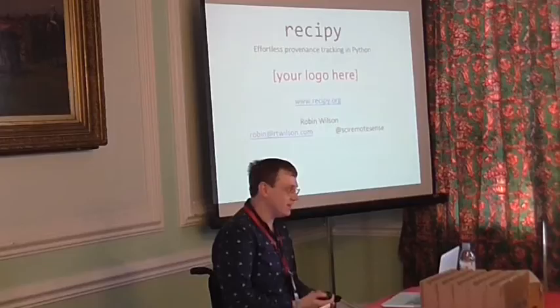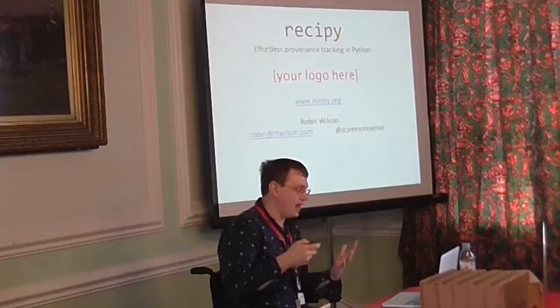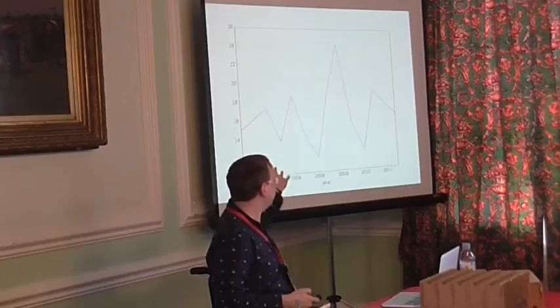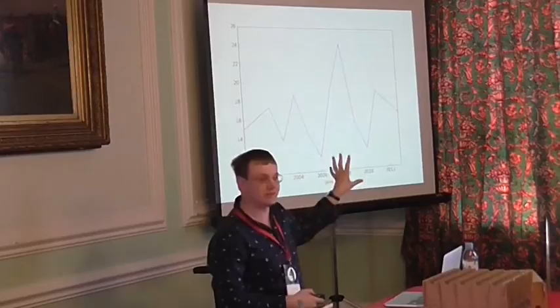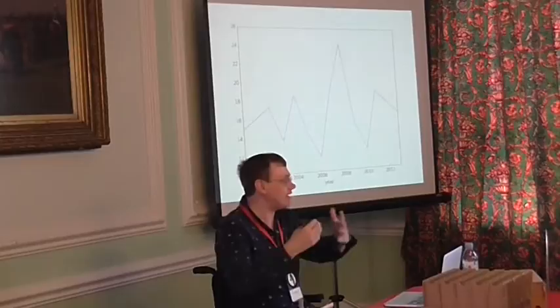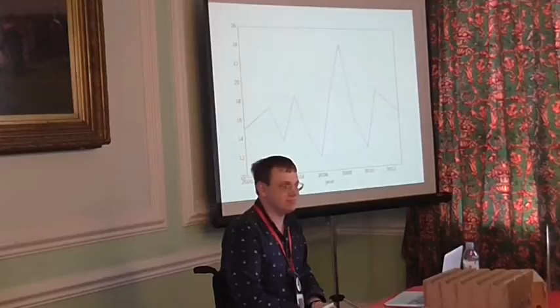I want to start with a question to you guys. Have you ever come up with a situation like this? You've produced a wonderful output of something — in this case it's a graph that obviously looks absolutely wonderful with no axis labels and so on, but never mind. It's a wonderful graph, or maybe it's a wonderful CSV file, or a wonderful image, or whatever it is that you're producing from your script. And you save it, and you come back to it a month later, or three months later, and go: now how the hell did I produce that?